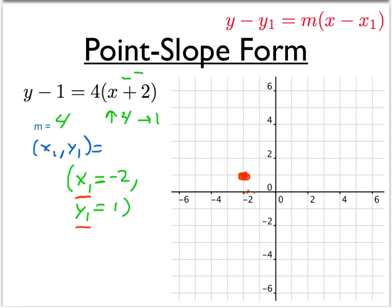The slope is 4. So we can go up 4 and over 1. So there's one of our points.